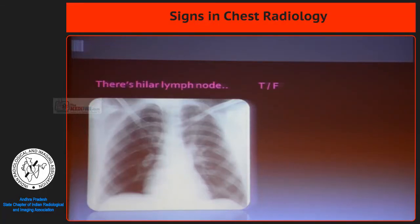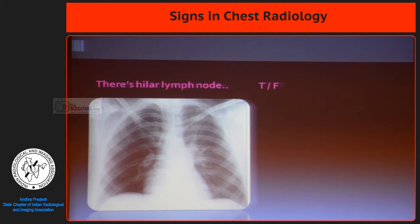There is a hilar lymph node. Can we apply the hylum overlay sign here? Can we see the pulmonary vessel here, posterior to the opacity? I don't think so.